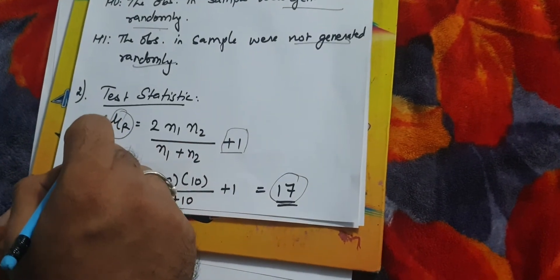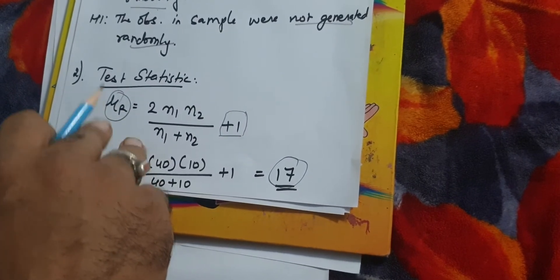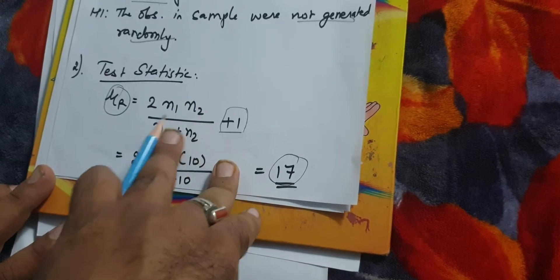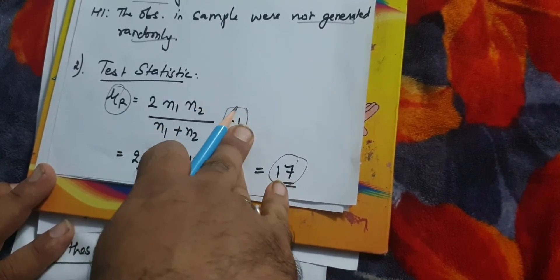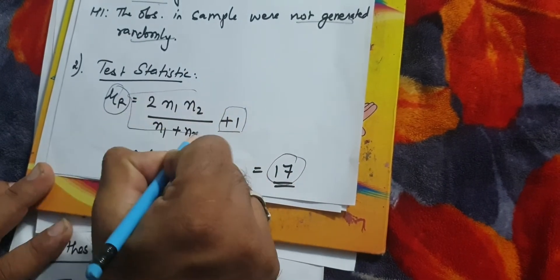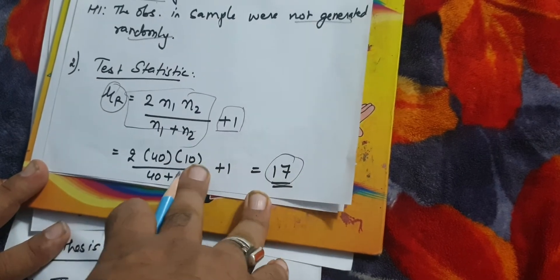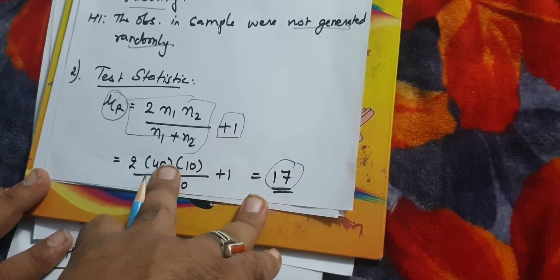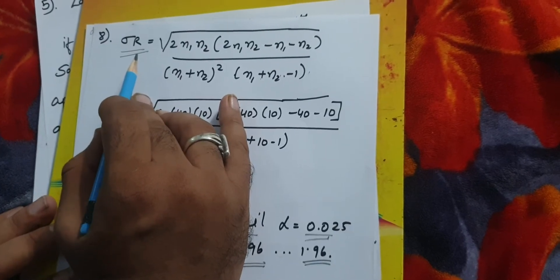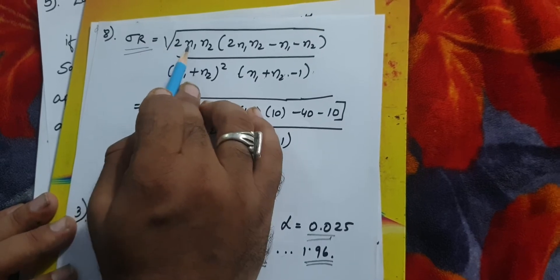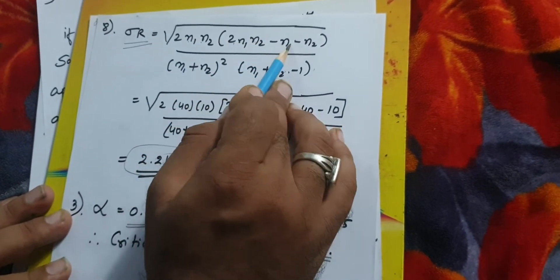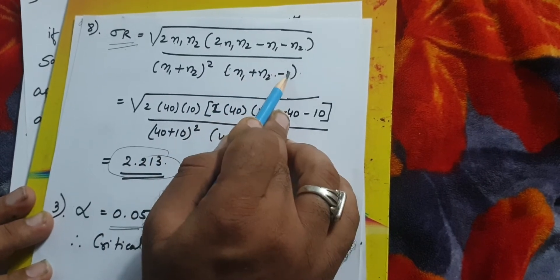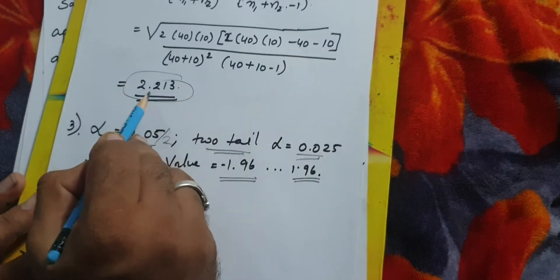Step 2 is to find test statistics. First, to apply Z test, we need to find mean. The formula is 2 times N1 times N2 divided by N1 plus N2 plus 1. So 2 times 40 times 10 divided by 40 plus 10 plus 1 gives us 16 plus 1, that is 17. Then we find standard deviation of R. The formula is square root of 2 N1 N2 times (2 N1 N2 minus N1 minus N2) divided by (N1 plus N2) squared times (N1 plus N2 minus 1). Applying all numbers gives 2.213.